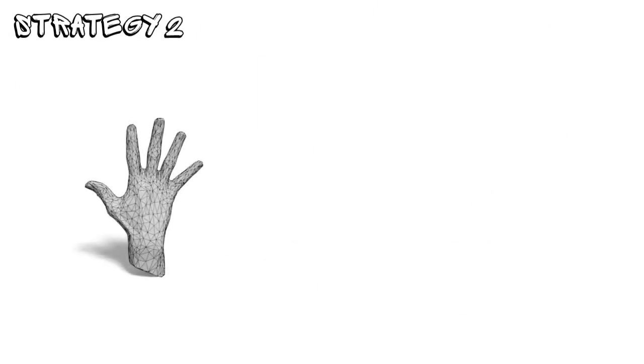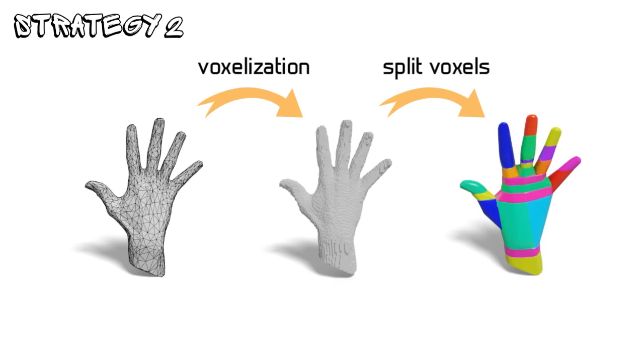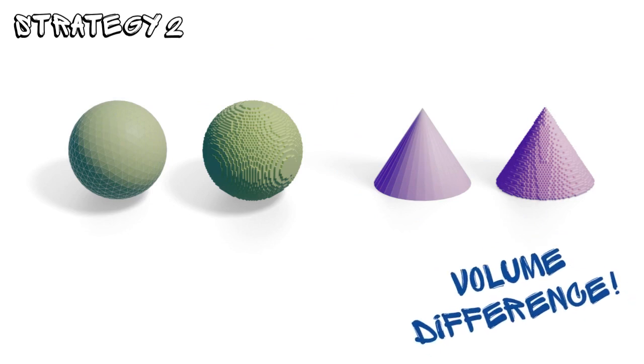On the other hand, some other works, like VHACD, first voxelize the input mesh, use voxels to represent the shape, and then recursively divide the voxels. However, the voxelization introduces discretization artifacts.